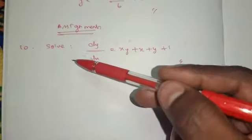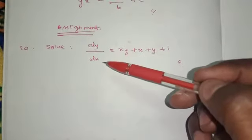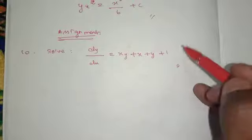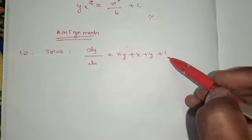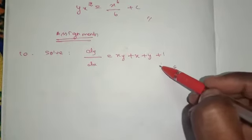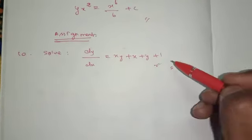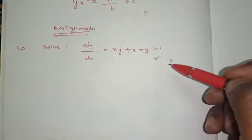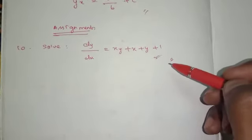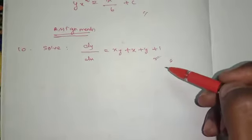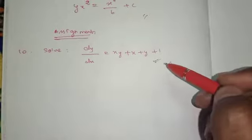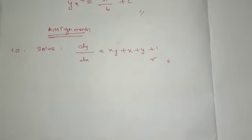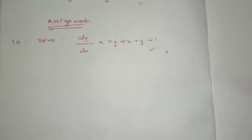Today's assignment: solve du/dx = xy + x + y + 1. If you can find out any method, you can find out the sum. It's a small sum, but if you have any method and type, you can find out the sum. Try one.